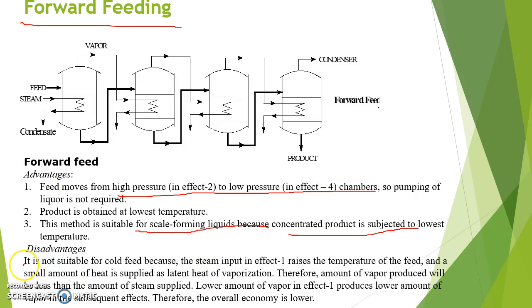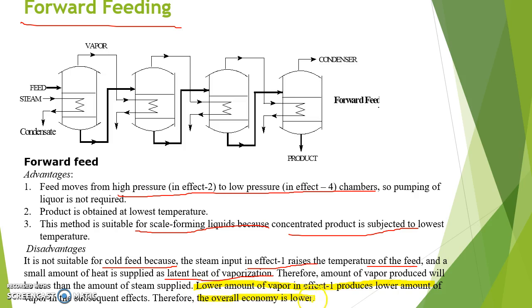The disadvantage of forward feeding is that it is not suitable for cold feed, because the steam input in effect 1 raises the temperature of the feed and a small amount of heat is supplied as latent heat of vaporization. Therefore, the amount of vapor produced will be less than the amount of steam supplied, and lower vapor in effect 1 produces lower vapor in subsequent effects, so the overall economy is lower.